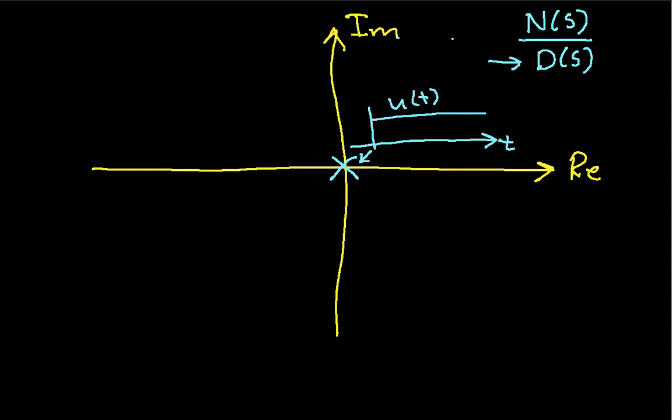Well, what does a pole over here with a negative real part correspond to? So, this might be at some value minus a. It has, it's on the real axis, so it doesn't have an imaginary part, and it's got a real part of minus a. Well, this corresponds to a term in a partial fraction expansion that looks like this, a constant over s plus a.